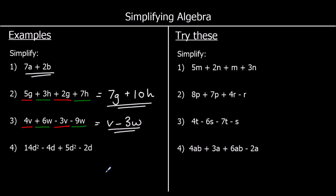Question 4: we've got d squared terms and d terms. d and d squared are not the same — they're different numbers — so we cannot add them together. For the d squared terms: 14 plus 5 is 19, so we've got 19d squared. For the d terms: negative 4 take away 2 is negative 6, so we write take away 6d.